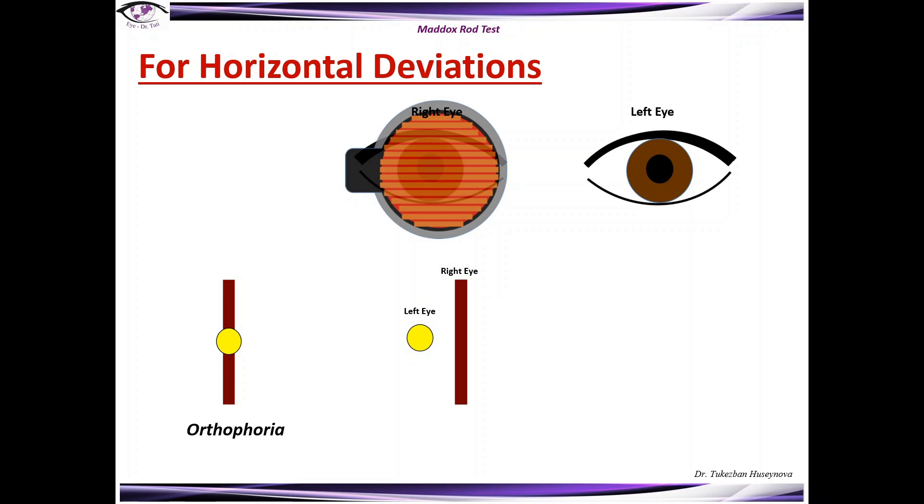In case if the patient sees the light on the right side of the line, this is a left esodeviation.